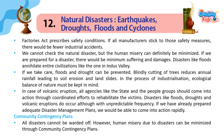We cannot check natural disasters, but human misery can definitely be minimized. If we are prepared for a disaster, there would be minimum suffering and damage. Disasters like floods have annihilated entire civilizations like the one in the Indus Valley. If we take care, floods and droughts can be prevented. Blindly cutting trees reduces annual rainfall, leading to soil erosion and landslides. In the process of industrialization, the ecological balance of nature must be kept in mind.